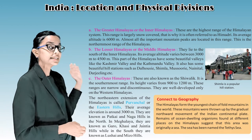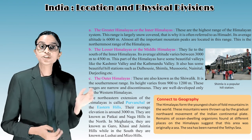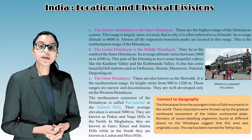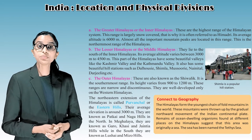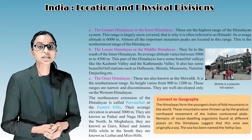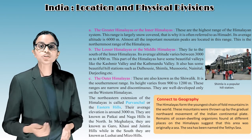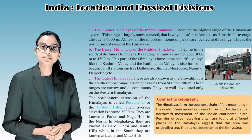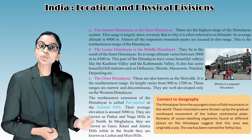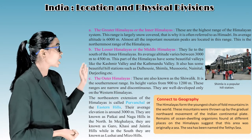The second range is the Lesser Himalayas or Middle Himalayas, lying to the south of the Inner Himalayas. Their average altitude varies between 3,900 meters and 4,500 meters. This part of the Himalayas has some beautiful valleys like the Kashmir Valley and the Kathmandu Valley, as well as beautiful hill stations such as Dalhousie, Shimla, Mussoorie, Nainital, and Darjeeling.